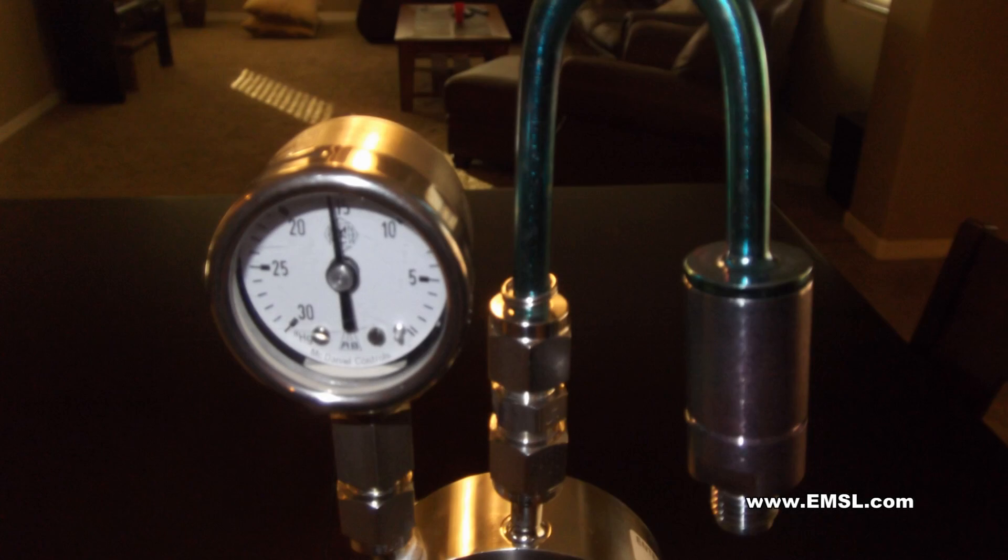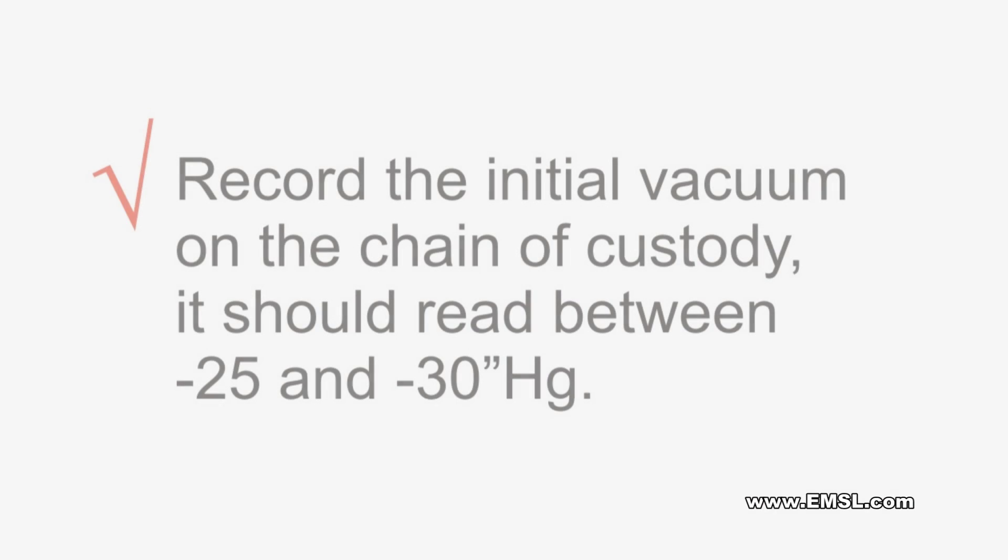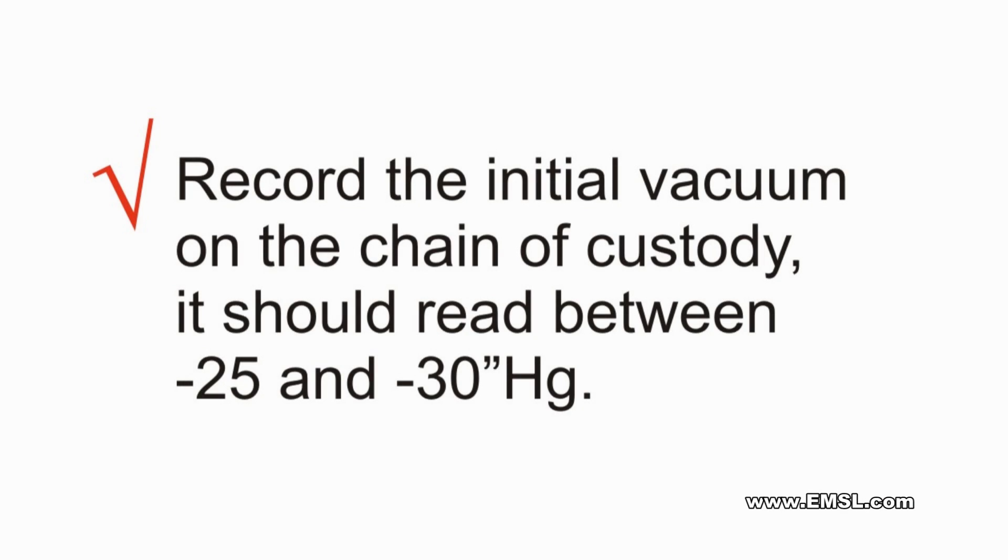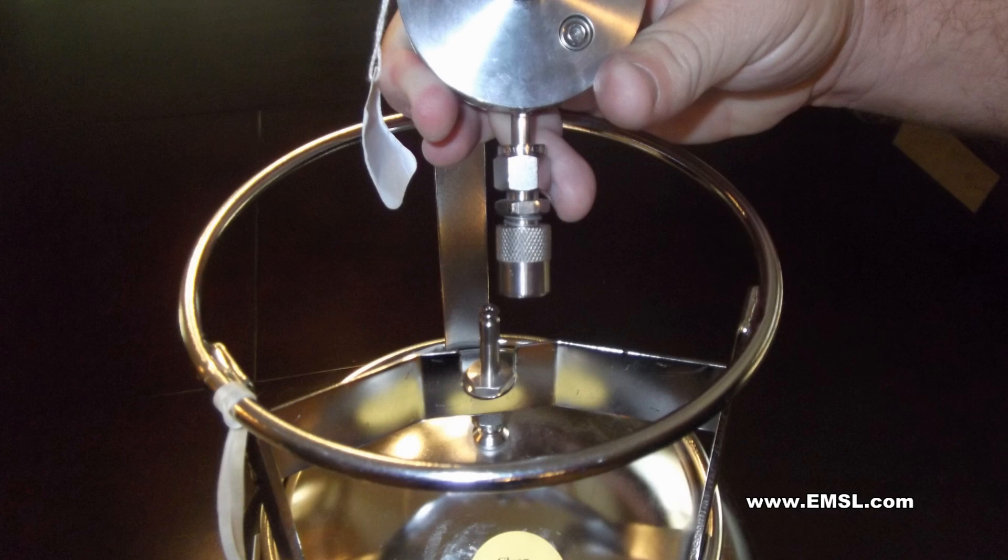Sampling begins when these two parts are engaged. Check the initial vacuum and record it on the chain of custody form. If the initial pressure does not read between -25 and -30 inches of mercury, disconnect and then reconnect the QT valve.